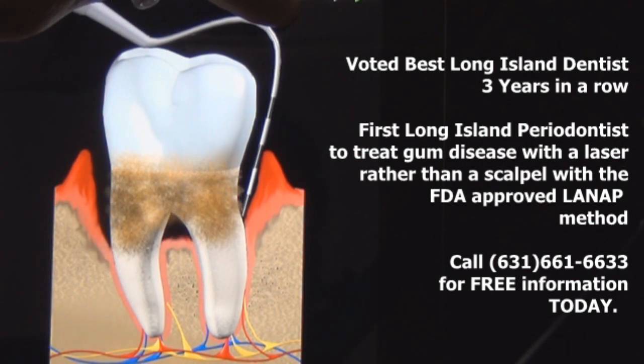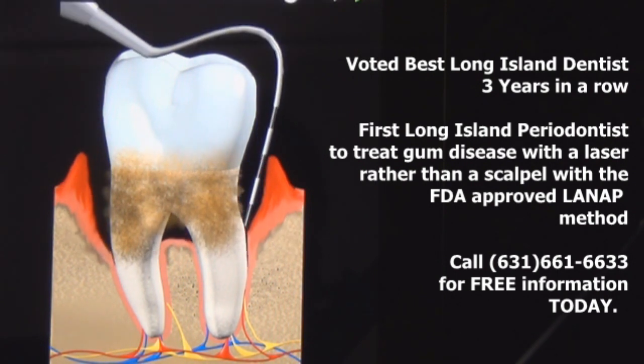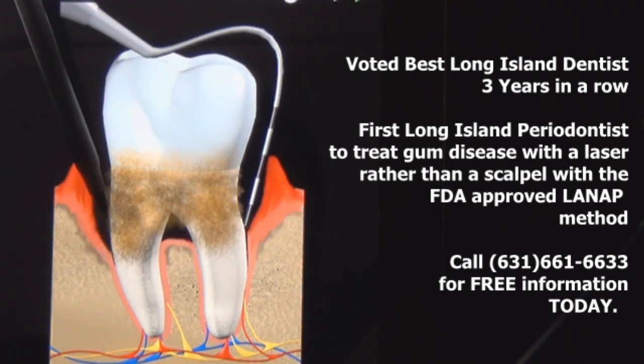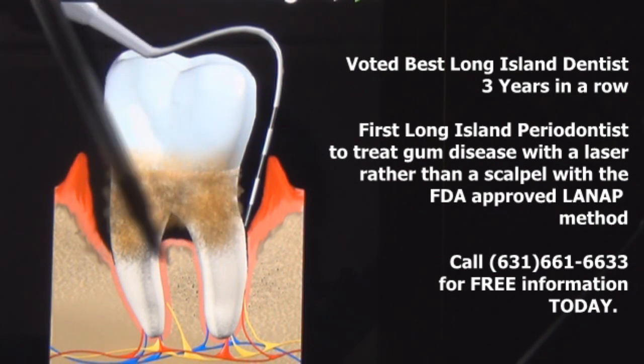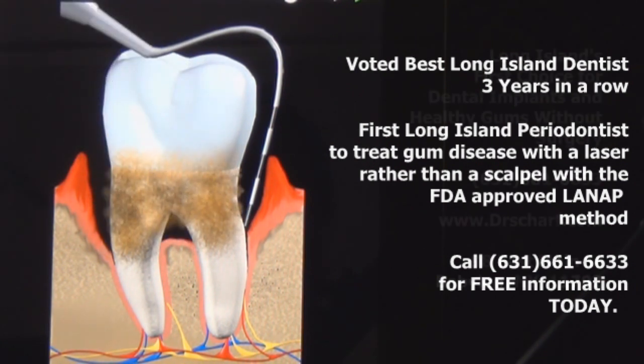As more and more bone is lost, the pocket gets deeper. More bacteria and tartar accumulate in the pocket, and when enough bone is lost around the tooth, eventually the tooth is lost.